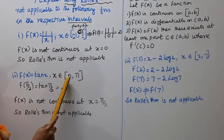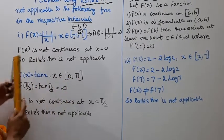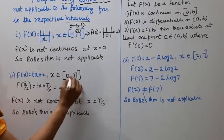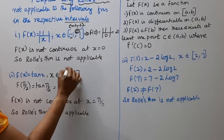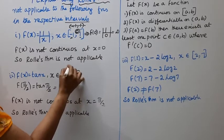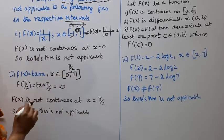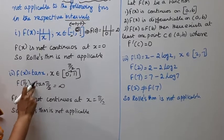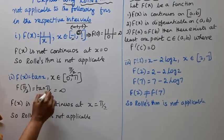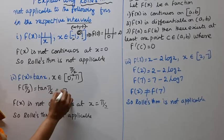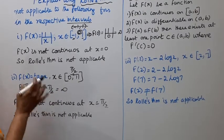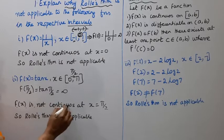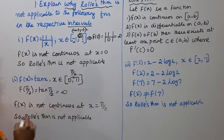Second: f(x) = tan x, x belongs to closed interval [0, π]. At x = π/2, tan(π/2) = tan 90° is infinity — f(x) does not exist. So f(x) is not continuous at x = π/2.